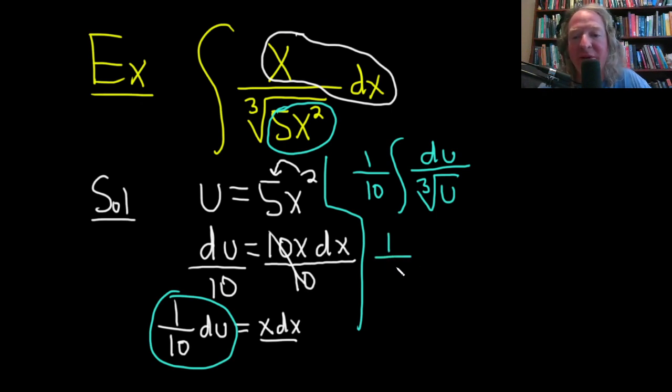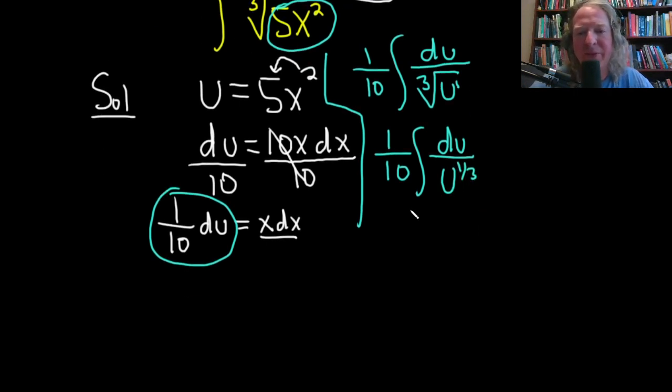So this is 1 tenth. And so now we can rewrite this. We want to write this as u to a power so we can actually integrate it. The integral of du over, there's really a 1 here, and it's u to the 1 over 3. So this is u to the 1 over 3.